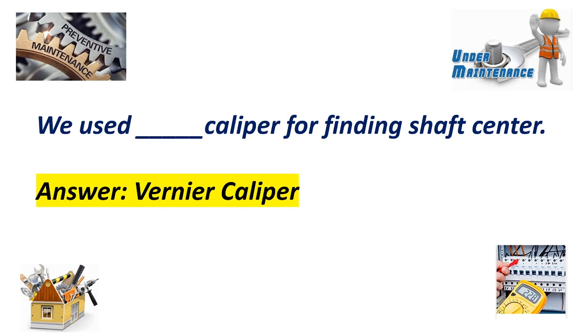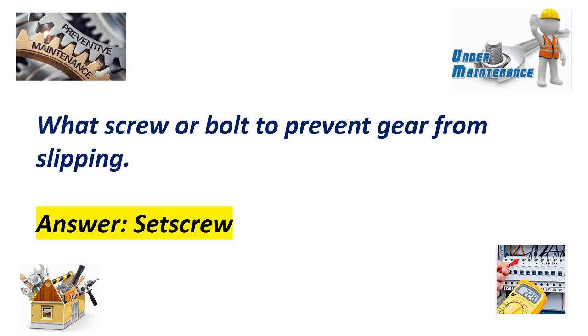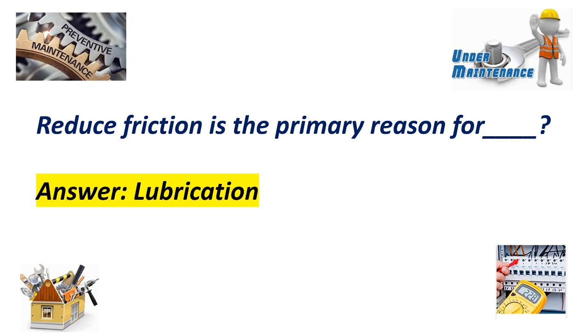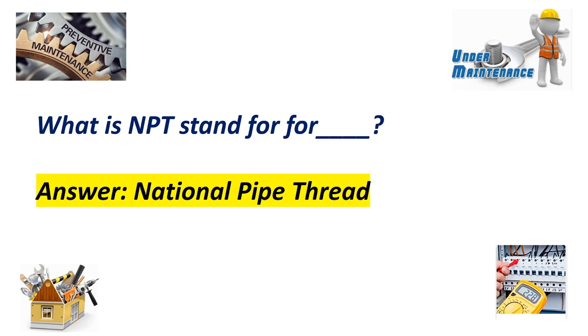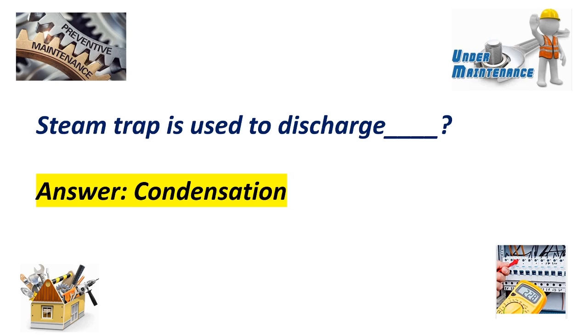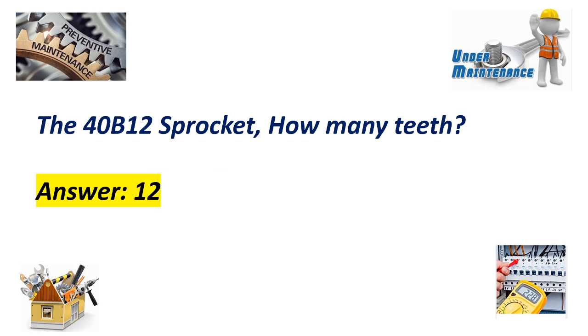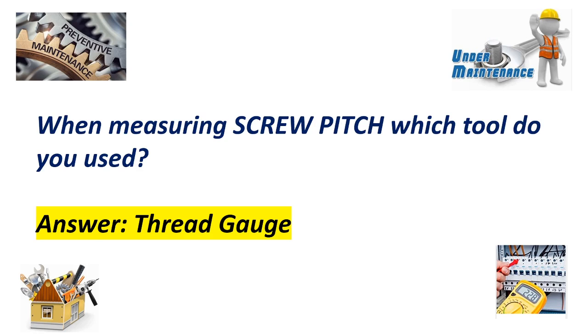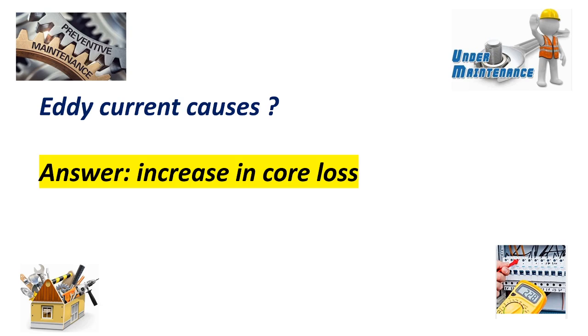We use Werner caliper for finding sharp center. Seat screw. Reduce friction is the primary reason for lubrication. What is NPT stands for? Answer National pipe thread. Steam trap issues to discharge condensation. The 40-bit weld bracket has 12 teeth. When measuring screw pitch, which tool do you use? Answer Thread gauge. Eddy current causes increase in core loss.